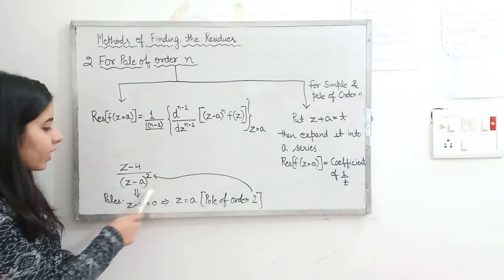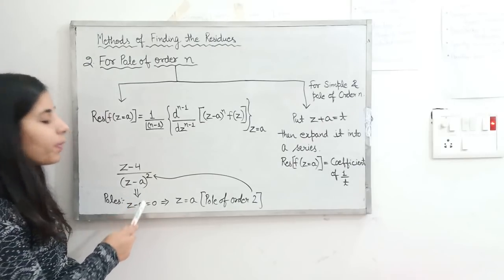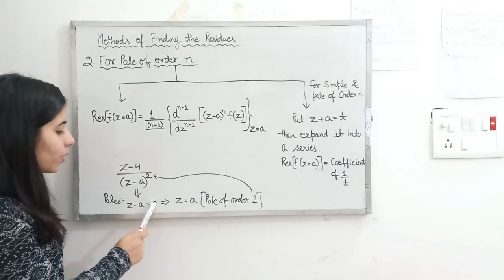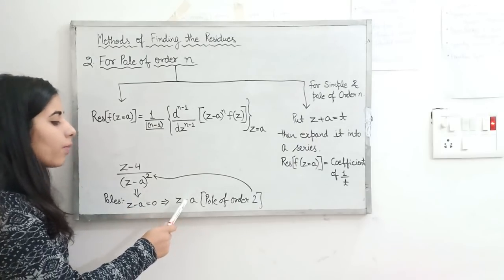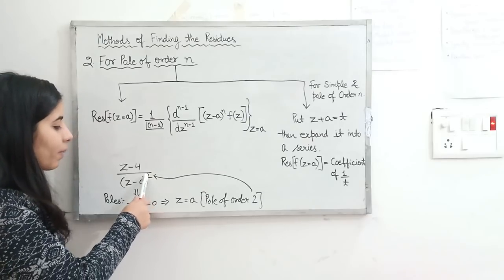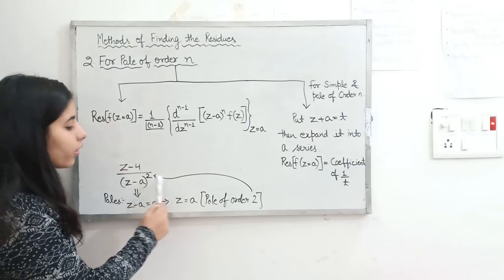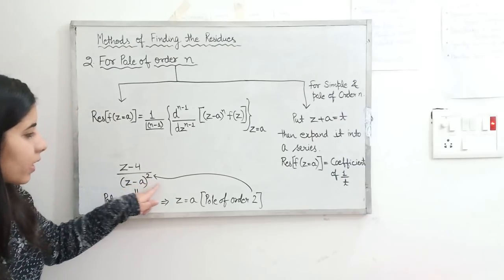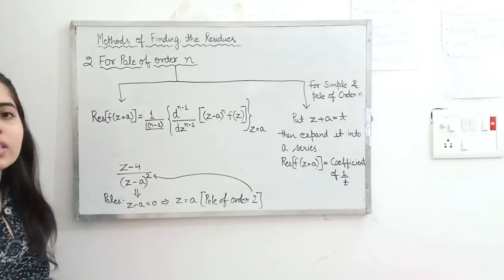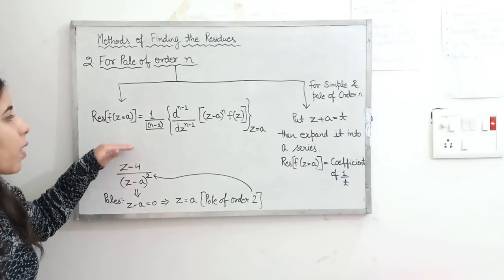Here is an example. If you have a function f(z) and when you equate the denominator to zero you get (z − a) = 0, giving z = a, then the order of the pole is determined by the overall power of (z − a) in the denominator. If the power is 2, it is a pole of order 2. If the power is 3, it is a pole of order 3.